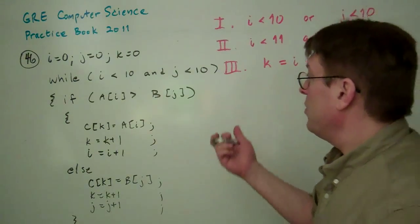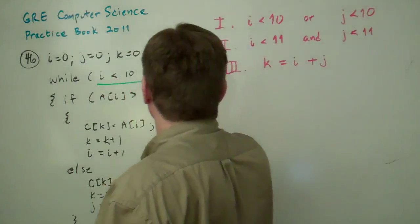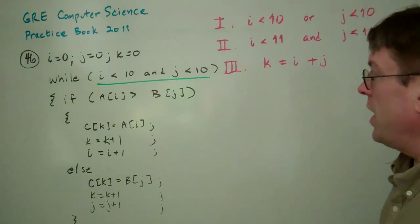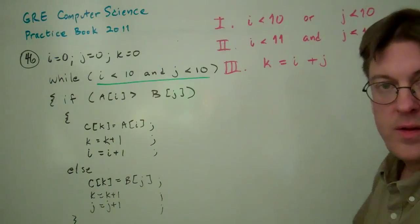Well, right now we have this loop invariant. I is less than 10 and J is less than 10.